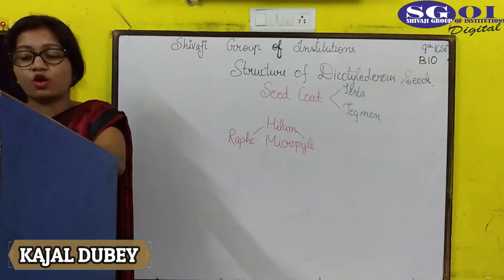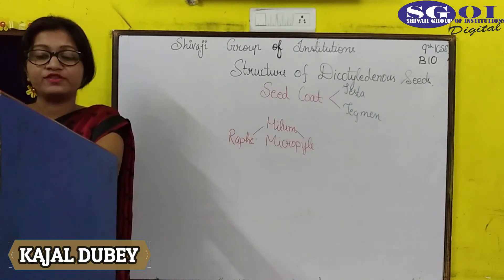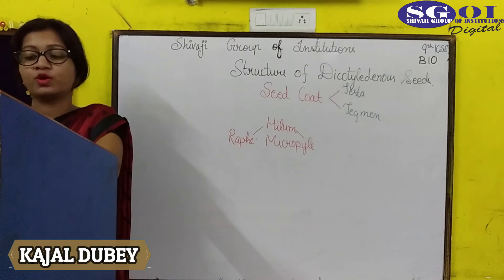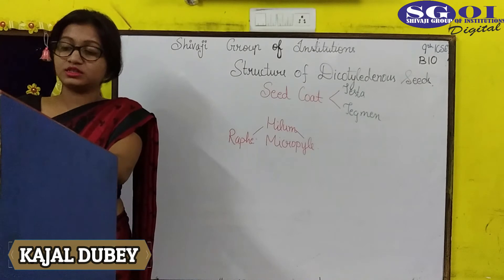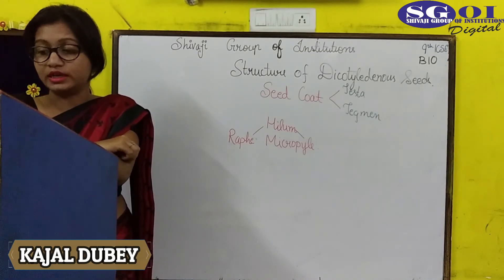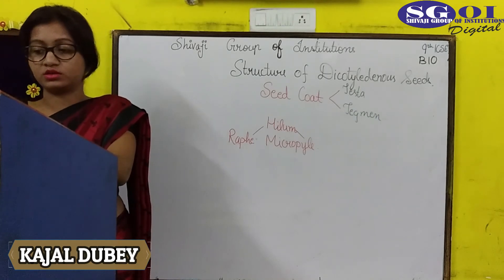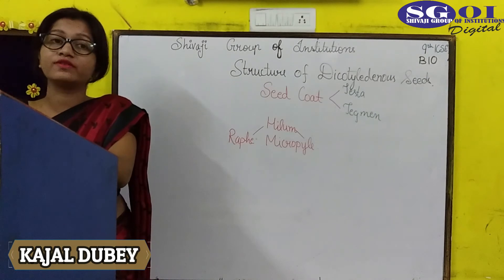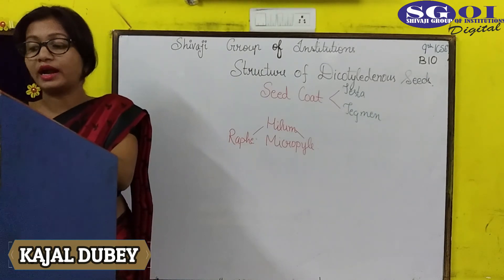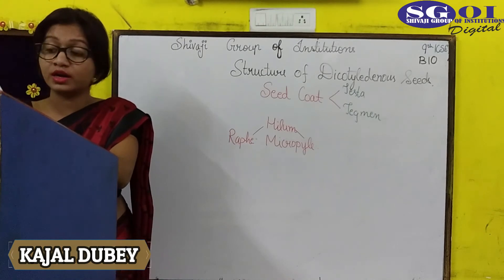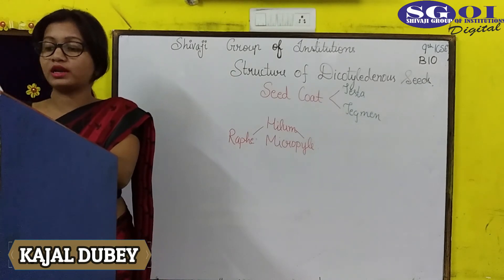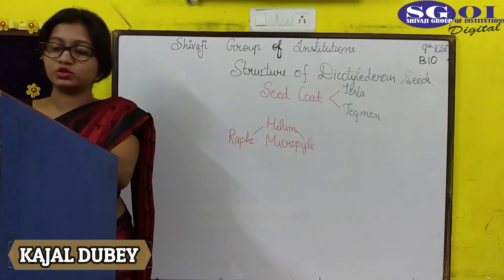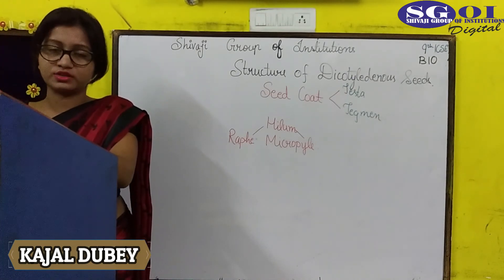When the seed coat is peeled off, a white fleshy body is seen. This white fleshy body consists of two parts: two fleshy cotyledons, which help in the storage of food, and a short axis to which the cotyledons remain attached. The axis consists of a radicle, which lies outside the cotyledons and gives rise to the root system, and the plumule, which is protected by the two cotyledons. The hypocotyl and epicotyl are also present, as discussed earlier.